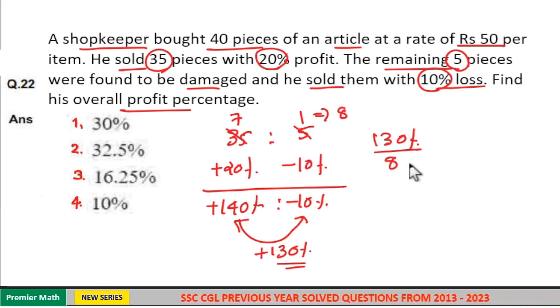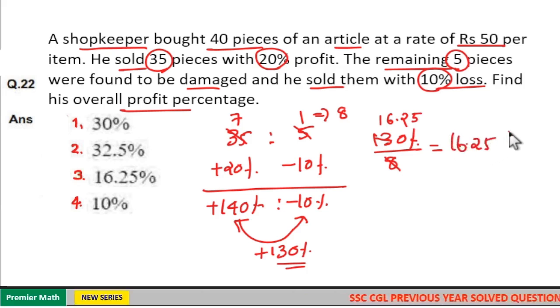So 130 percentage by 8 is equal to... 8 goes 1 time in 13 remaining 5, 8 goes 6 times in 48 remaining 2, 8 goes 2 times in 16 remaining 4, 8 goes 5 times in 40. So 16.25 percentage.